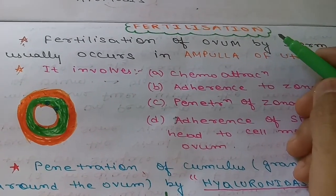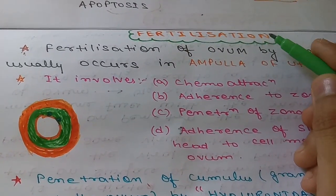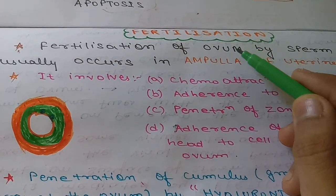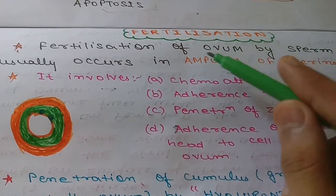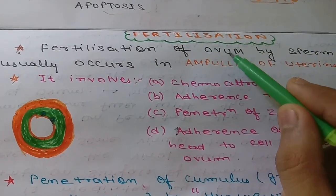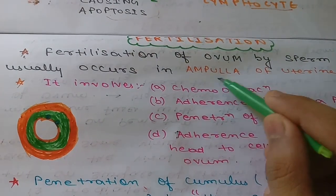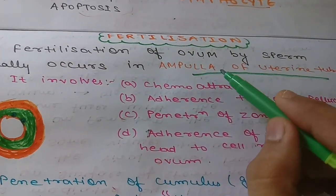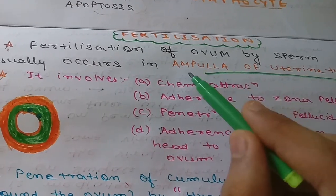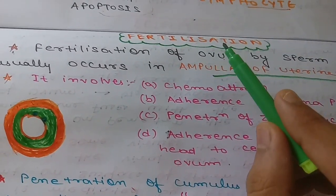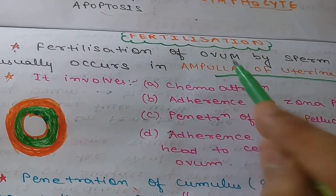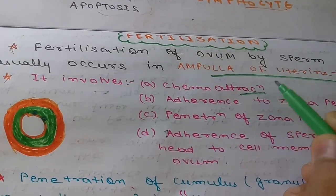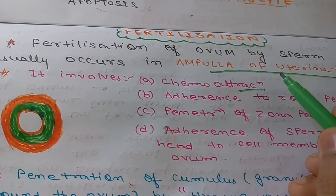Today we are going to discuss about fertilization. Fertilization is a fusion of ovum and sperm, and this fertilization of ovum by sperm usually occurs in the ampulla of the uterine tube. This fertilization basically involves four steps.